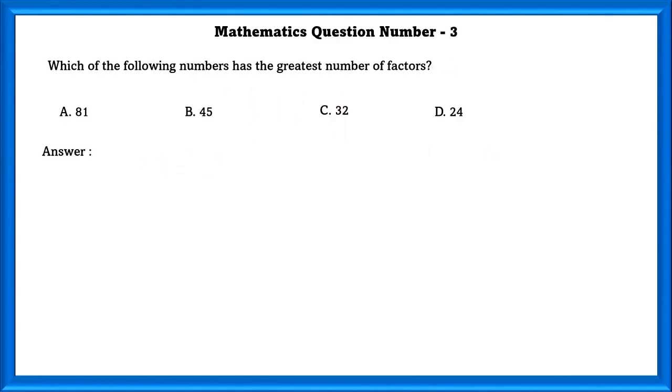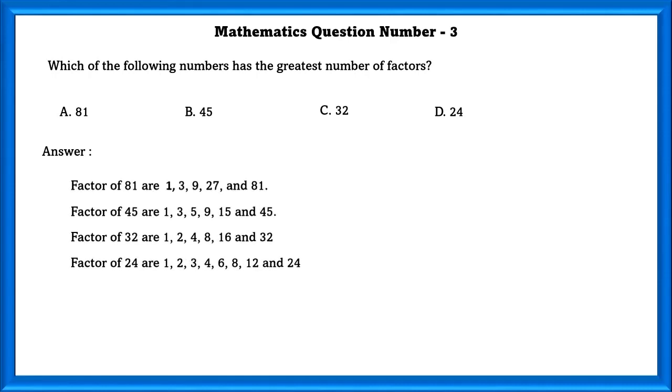Mathematics question number 3. Which of the following numbers has the greatest number of factors? We have to first find the factors of every single number in these options and we are going to find how many factors each number has. As we can see 24 has 8 factors. So it has the greatest number of factors.